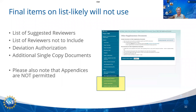The last three items on the proposal package you will likely not use, but you might. You can suggest reviewers you think would be good for your project — that doesn't mean we'll necessarily select them. If there are individuals or organizations you do not want to review your proposal, indicate that as well. There is also something called a deviation of authorization, which only comes through conversations with the program officer. There are no additional single-copy documents needed, and please note that appendices are not permitted — if you attach anything as an appendix, your proposal will be returned without review.